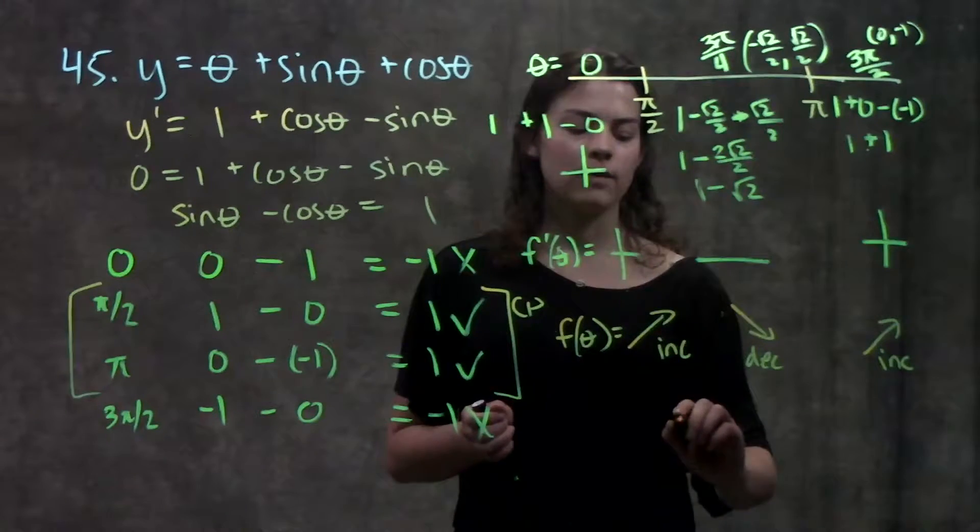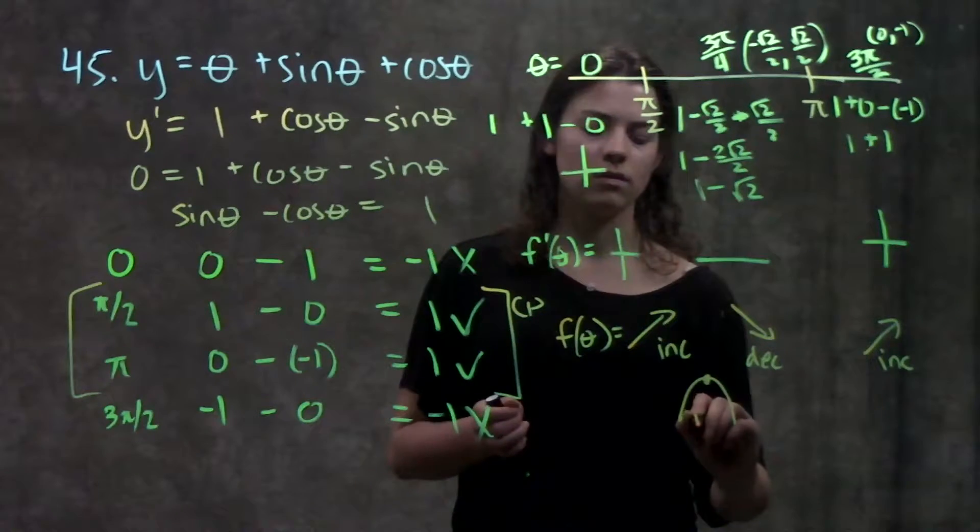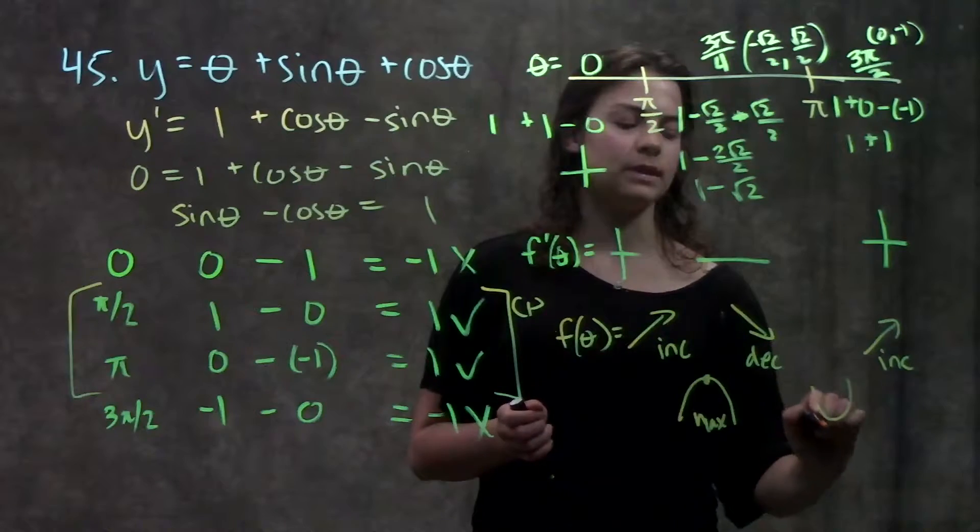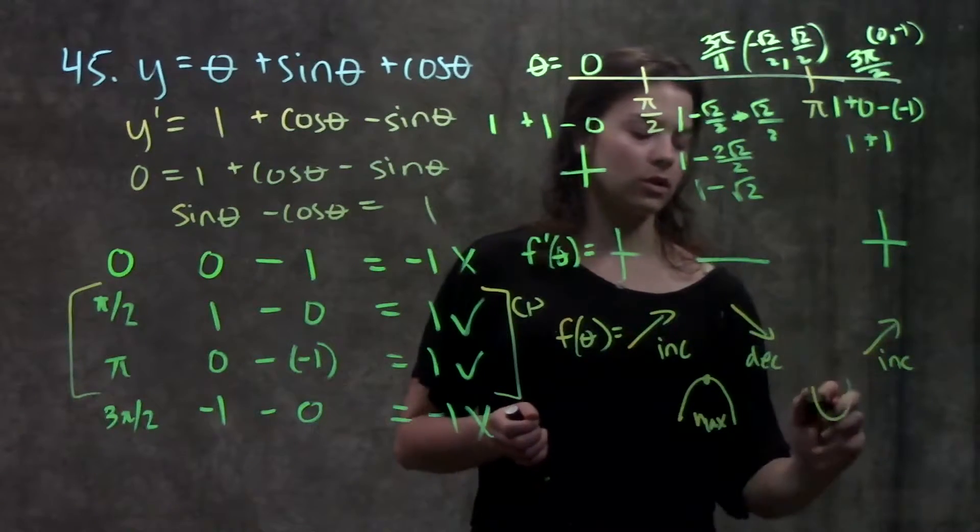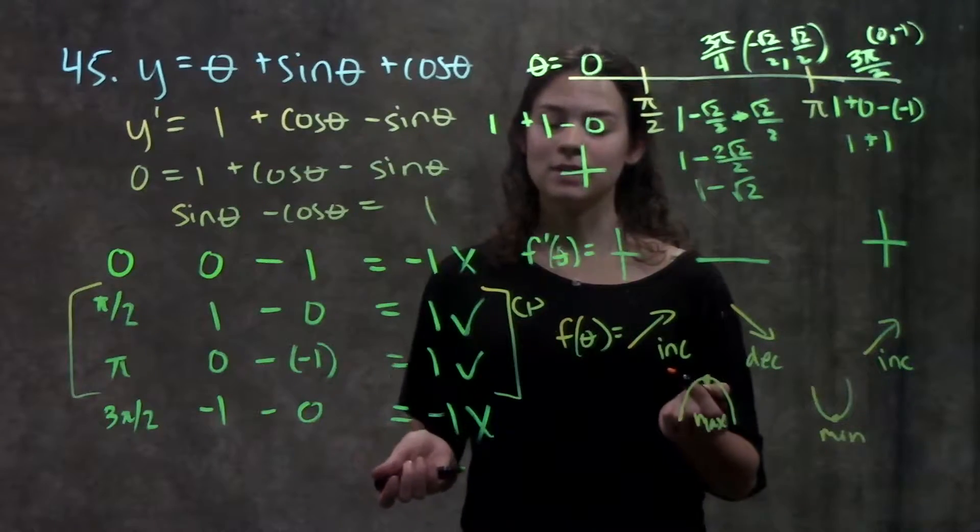So here, since I'm going from increasing to decreasing, I know that this critical point pi over two has to be a max. And likewise over here, since I'm going from decreasing to increasing, this critical point pi has to be a min. And that's really it for this problem.